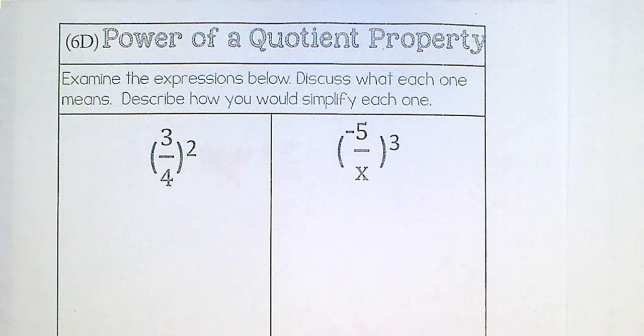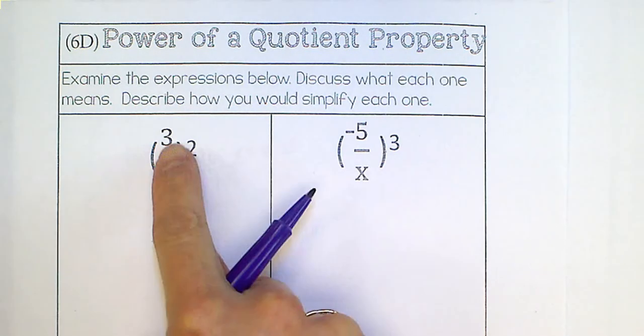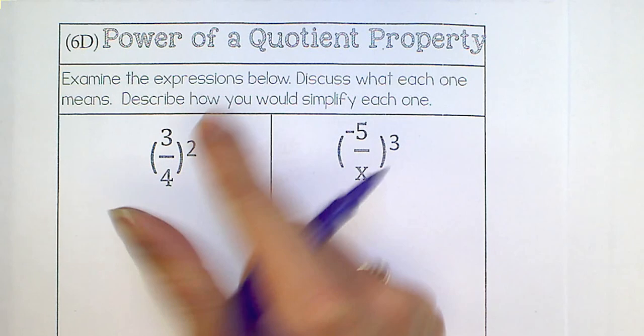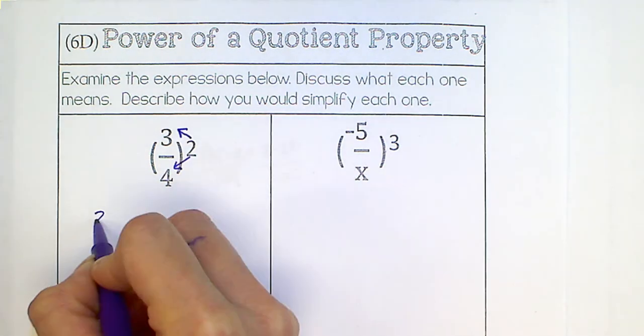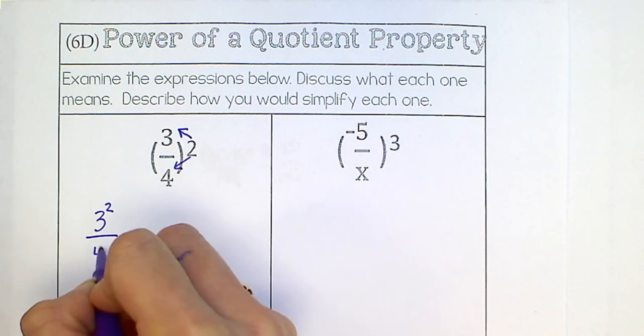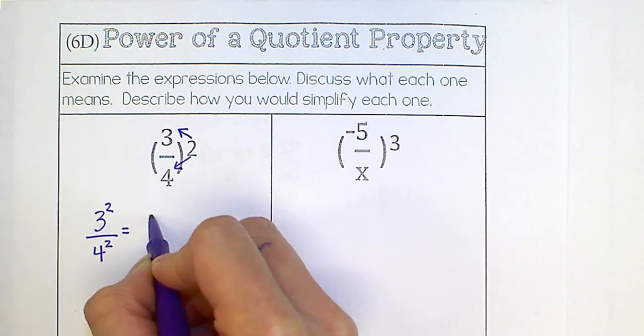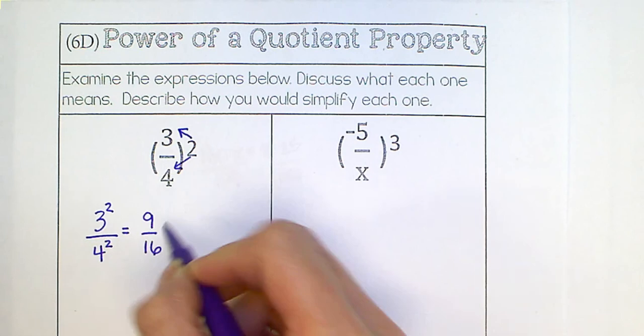Okay, let's try a few of these problems. When we have division here, we're still going to distribute this exponent to the 3 and the 4. So this will be the same as 3 squared over 4 squared, and then you need to go ahead and work those out. So this will be 9 over 16, and then simplify this if you can.